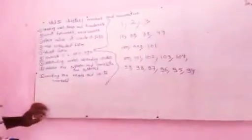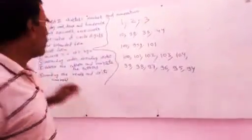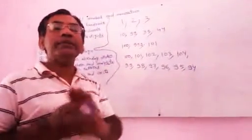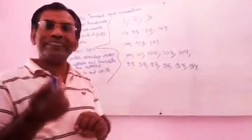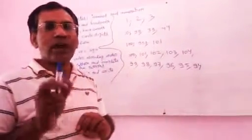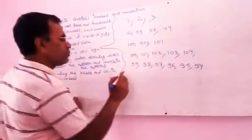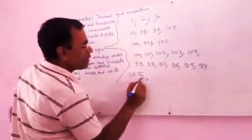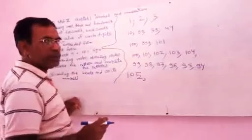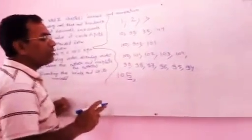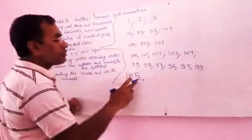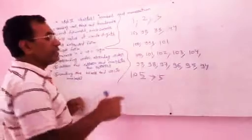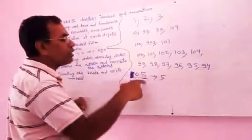Now I am going to teach you topic number 3: place value of circled digits. You have been given many numbers and one digit is circled. You have to find the place value. For example, suppose 105 is given and 5 is underlined. The place value of 5 is 5, because 5 is in the ones place.